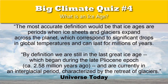According to Matt Williams of Universe Today: "The most accurate definition would be that ice ages are periods when ice sheets and glaciers expand across the planet, which correspond to significant drops in global temperatures, and can last for millions of years." Williams goes on to say: "By definition, we are still in the last great ice age, which began during the late Pliocene epoch, circa 2.58 million years ago, and are currently in an interglacial period characterized by the retreat of glaciers."